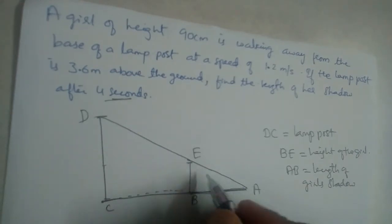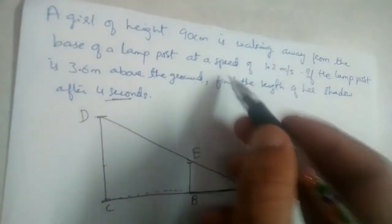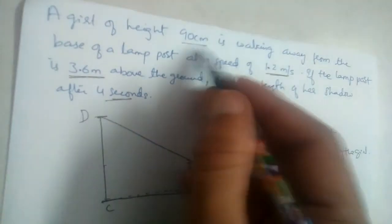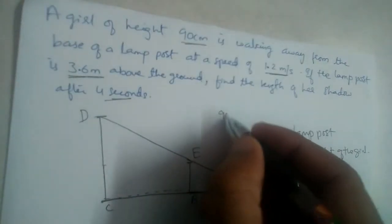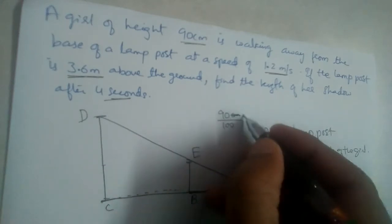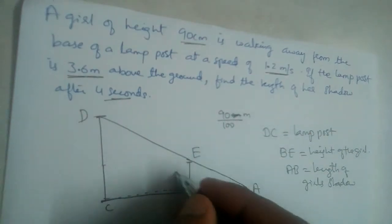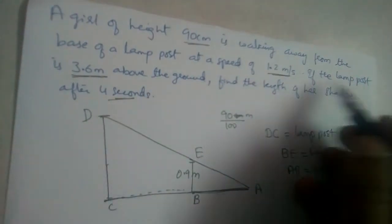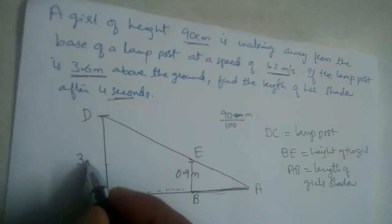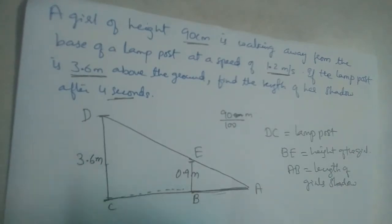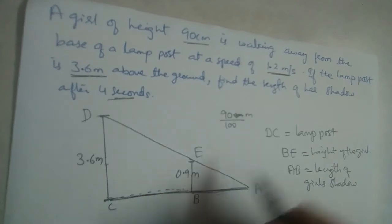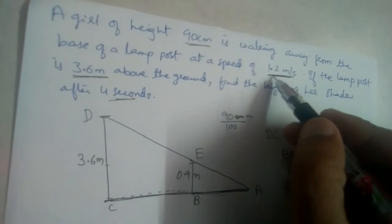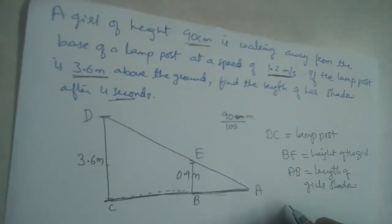We need to find AB — the length of the girl's shadow. BE is given as 90 centimeters, but all other measurements are in meters, so we convert: 90 cm divided by 100 equals 0.9 meters. The lamppost DC is 3.6 meters above the ground. The speed of the girl is 1.2 meters per second.